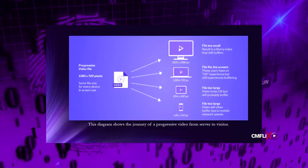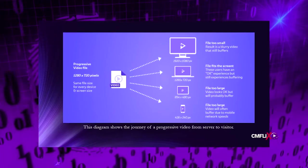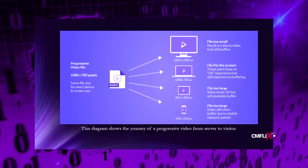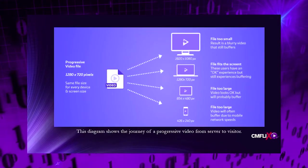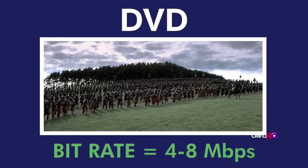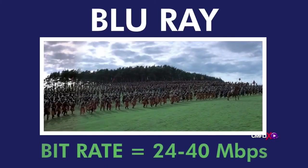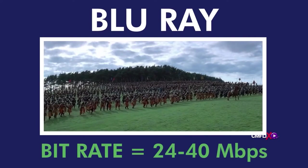The video bitrate of a stream refers to the speed for transferring video data to a user's device. The standard measure for a bitrate for streaming video is megabits per second, which differs from a video's file size measured in megabytes.